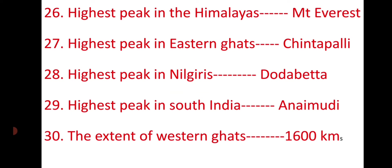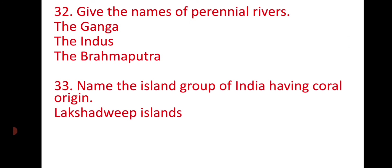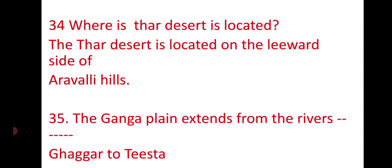The highest peak in India is Kanchenjunga. The islands having coral origin are the Lakshadweep Islands — coral means coral islands. The Thar Desert is located on the leeward side of the Aravali Hills.